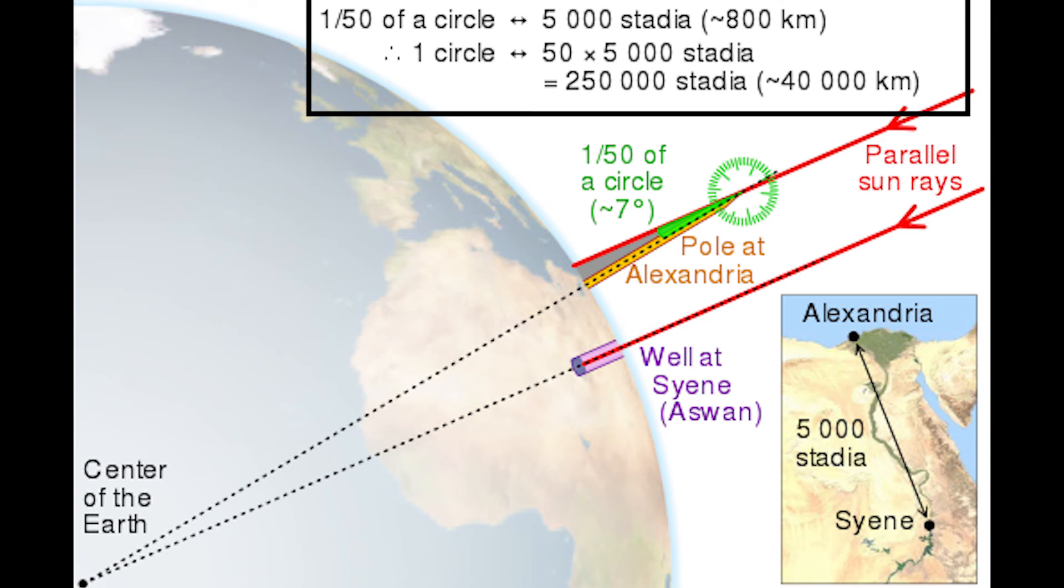As we know, 7 degrees is around 1/50 of the whole circle, that's 360 degrees. So we just have to multiply 50 times the distance, which will give us the whole circumference of the sphere, in this case the earth. So if you just multiply 5000 stadia by 50, we'll get the circumference of earth from his calculations, that was 250,000 stadia.